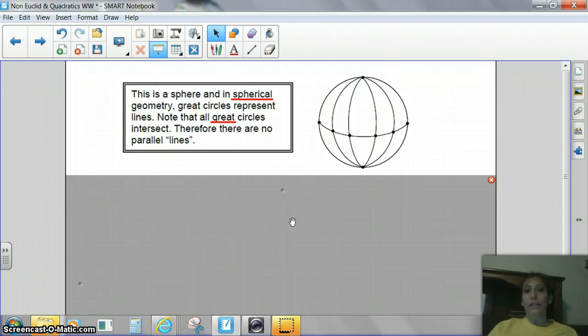The first one that we're going to talk about is non-Euclidean geometry, and the first type is called spherical geometry. Now, if you look on your handout or on the video, you'll see that it kind of looks like a globe, and the circle that goes around the globe, that you would call the equator, is actually called the great circle. It basically cuts the circle in half.